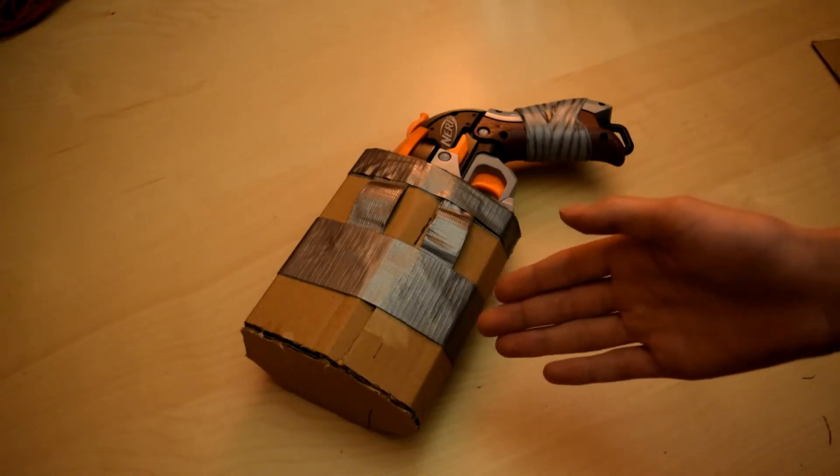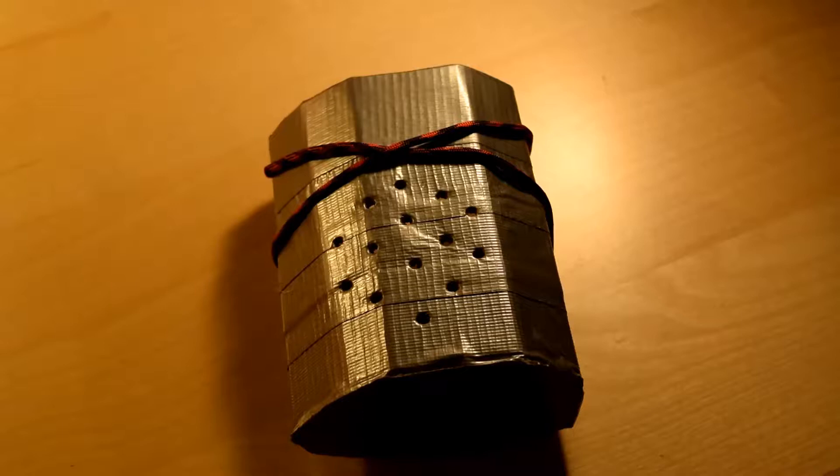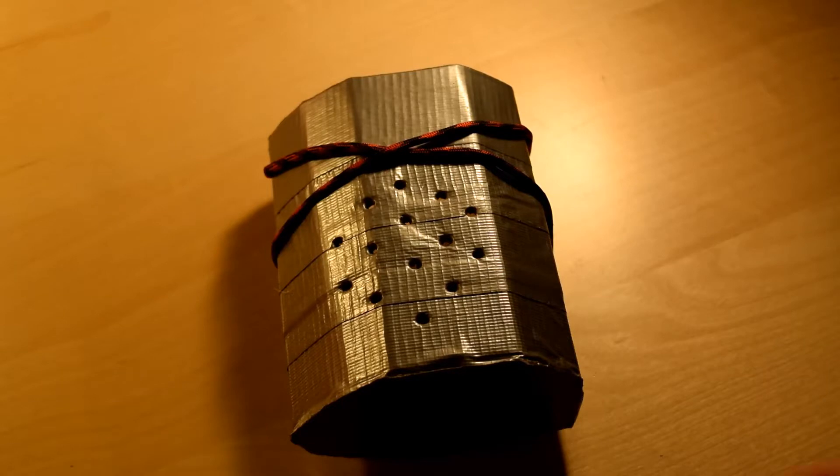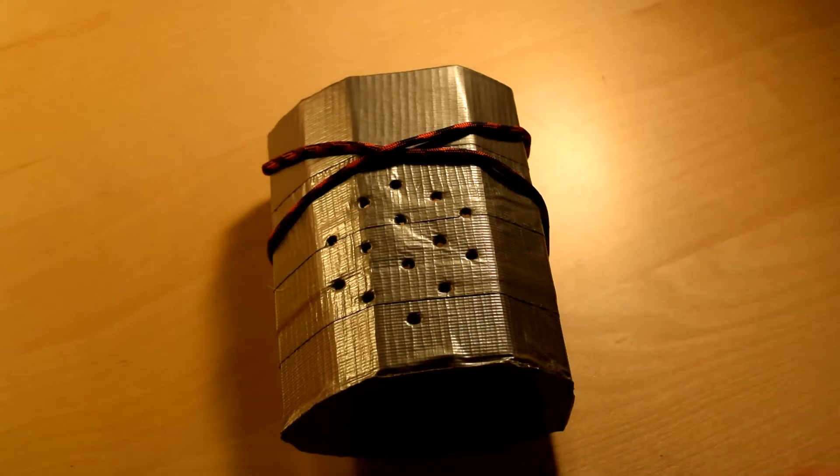At this point it is a functional holster, but I'm going to spice mine up a bit first and then I'll show you how to put it on. This is my finished holster. I wrapped the whole thing in duct tape to give it a nice shine, and then I added some paracord to crisscross and give it some color, and then punched some holes for texture. Now I'll show you how to put it on.